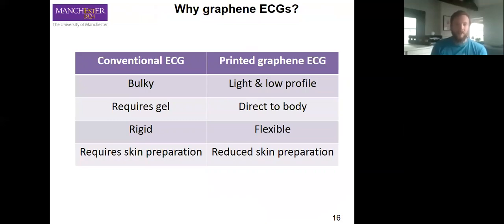Conventional requires gel. The gel is a connection between the skin and this reduces the impedance delay. But our printed graphene ECGs, if we can put them direct to body or through a thin layer, we don't have to worry about this uncomfortable sticky gel, which is not particularly pleasant in a hospital setting.